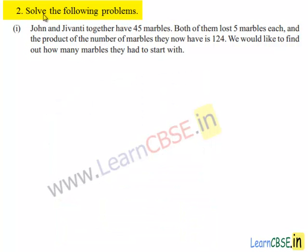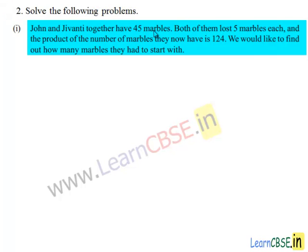Coming to the second problem, solve the following problems. The first bit given is: John and Jeevanti together have 45 marbles. Both of them lost 5 marbles each and the product of the number of marbles they now have is 124. We would like to find out how many marbles they had to start with.